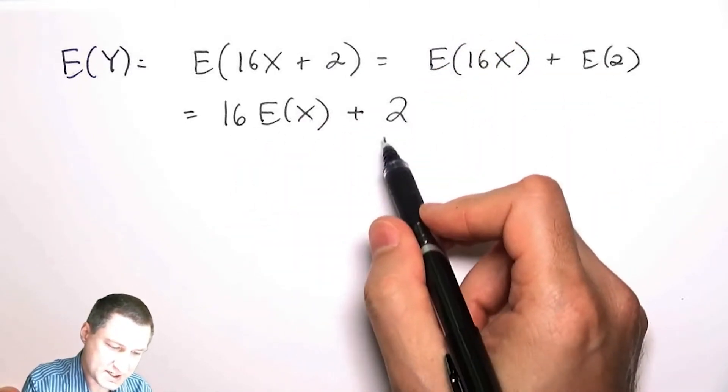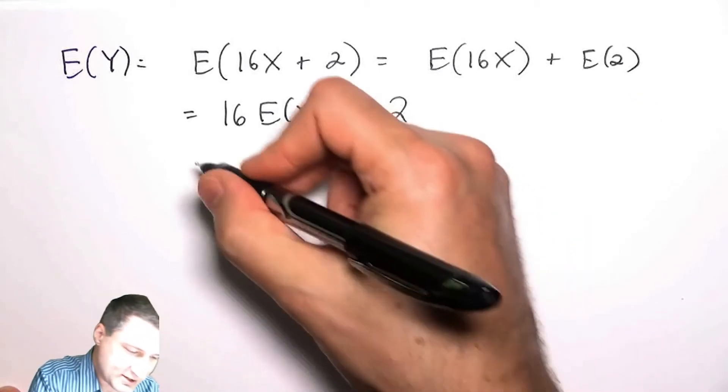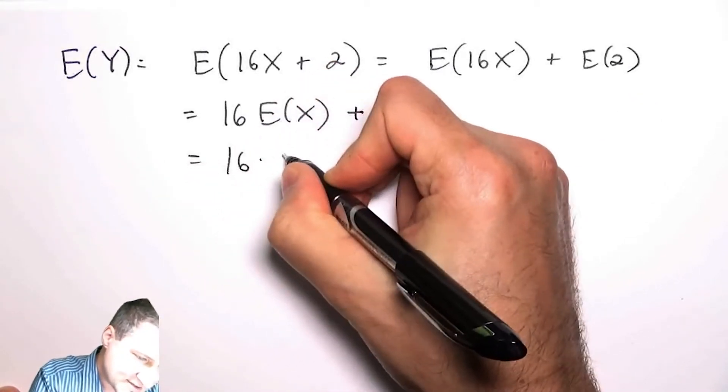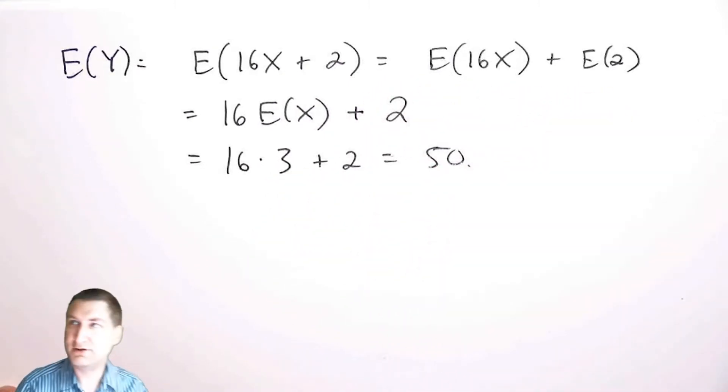This part couples apart, 16 times E(X) plus 2, because 2 is a constant. So I look back and say okay well 16 times the expected value of X was 3 plus 2 is 50. So no complex integration here, just a little bit of manipulation.